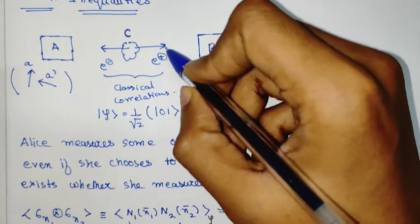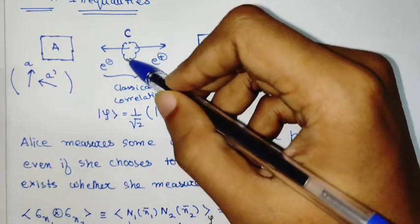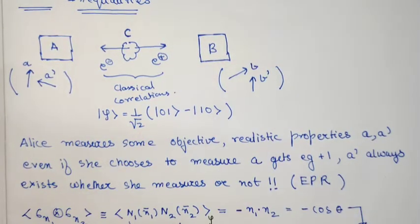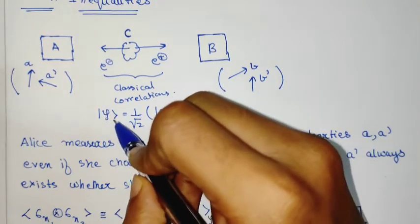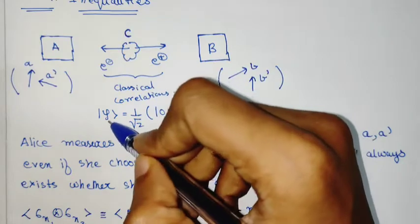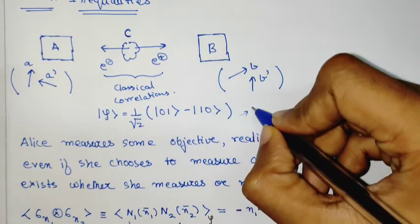This can be like classical correlations arising from conservation of angular momentum. In this setup, we can also think that the state they are sharing is the singlet state.